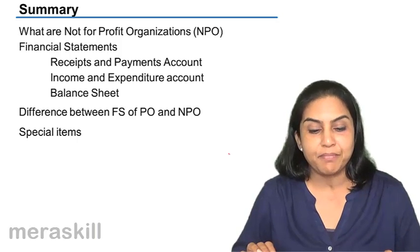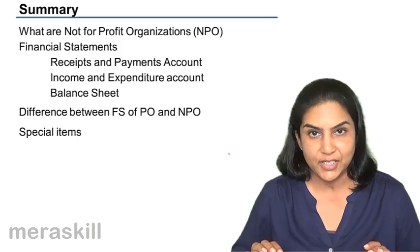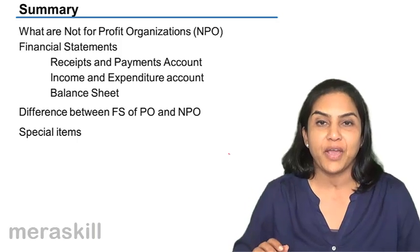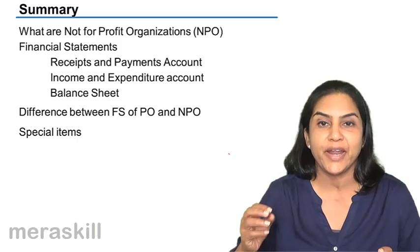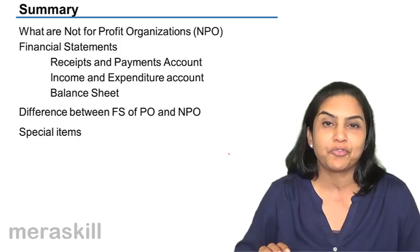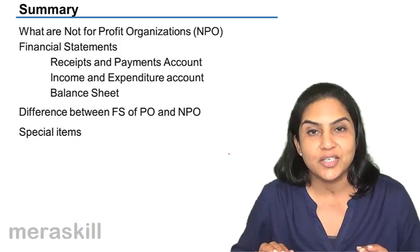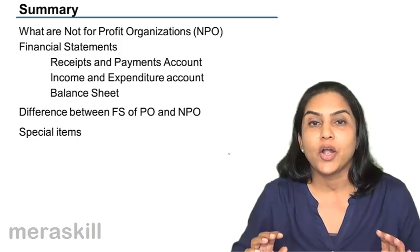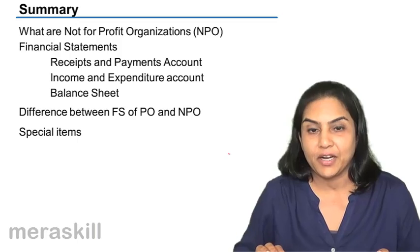What are the final accounts of a not-for-profit organization? As said, they do not earn profits. If they do have any excess of income, they receive incomes in the form of subscription, entrance fees, membership fees, etc. If they have any excess of income over expenditure, it is not called profit — it is called surplus, and it is kept in a fund called the accumulated fund, general fund, or capital fund.